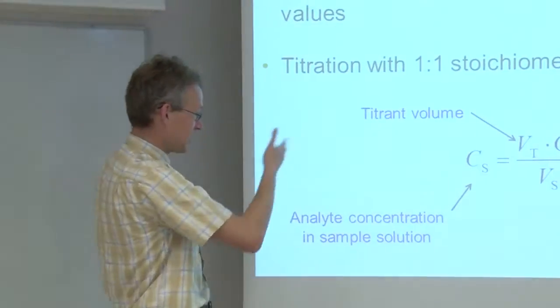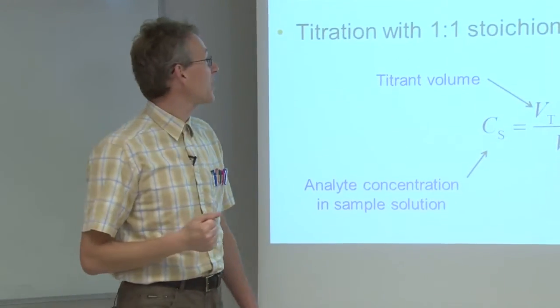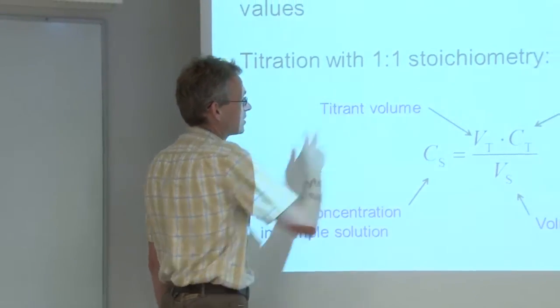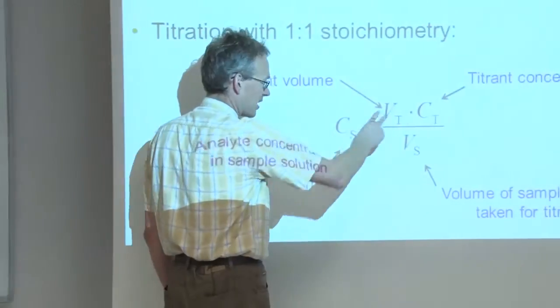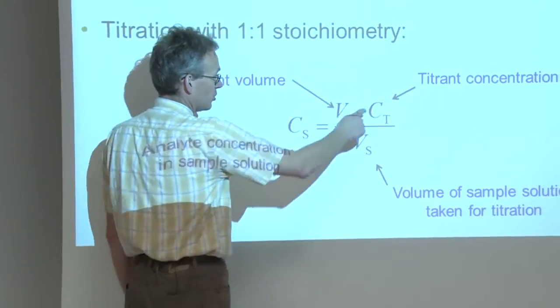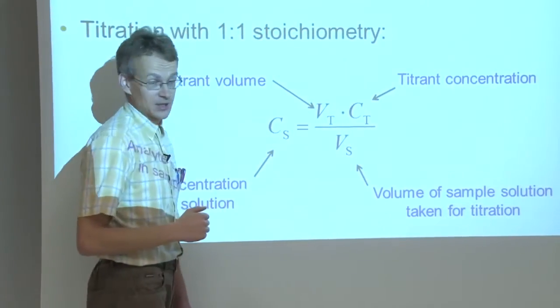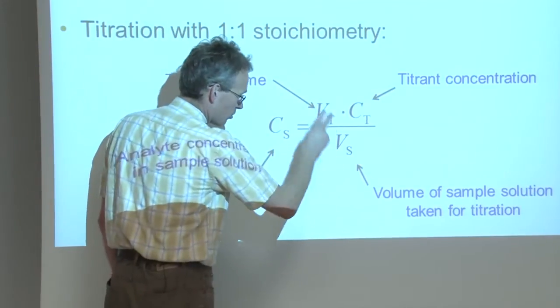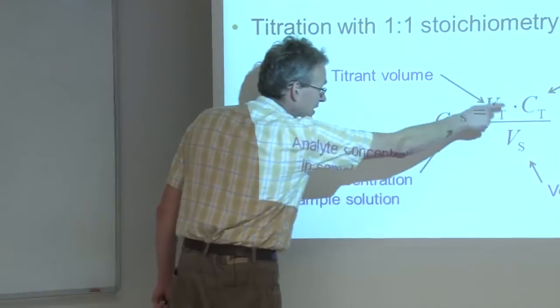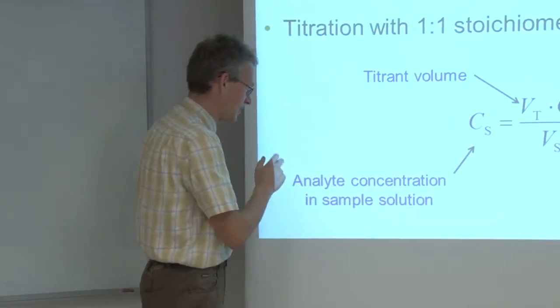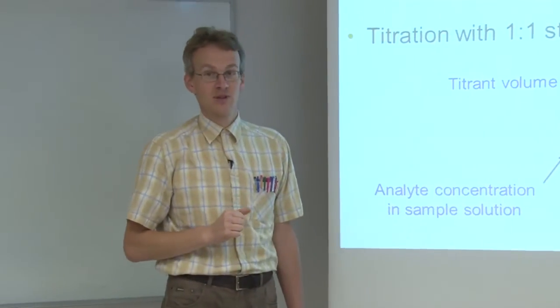So this is here a typical measurement model for a titration with one-to-one stoichiometry. So we have here the volume of titrant that was consumed, the molar concentration of the titrant, and then the volume of the sample solution. And from these data we can calculate the analyte concentration in the sample solution.